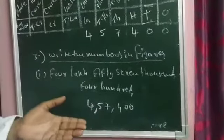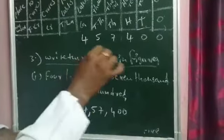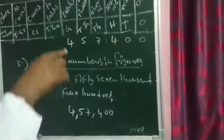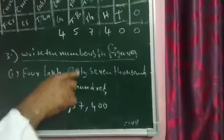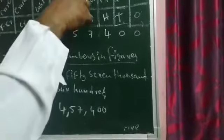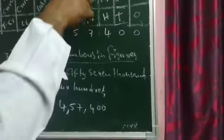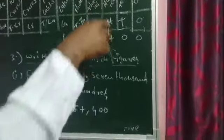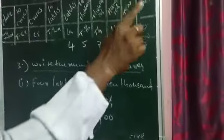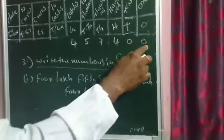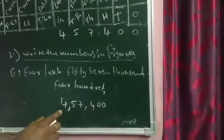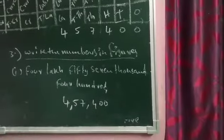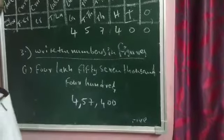Observe the table and it becomes very easy to write. Four lakhs means four in the lakhs place. Fifty means five in ten thousands place. Seven thousands means seven in thousands place. Four hundred means four in hundreds place. Tens place has no value and ones place has no value, so we keep two zeros. Write using commas and show: four lakh fifty-seven thousand four hundred. Try the remaining sums the same way.